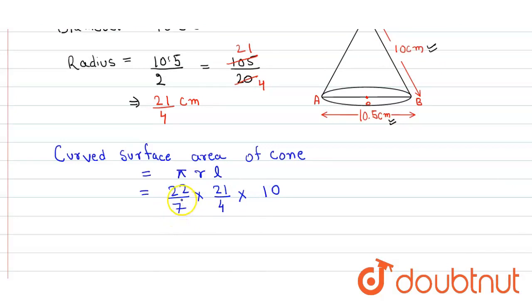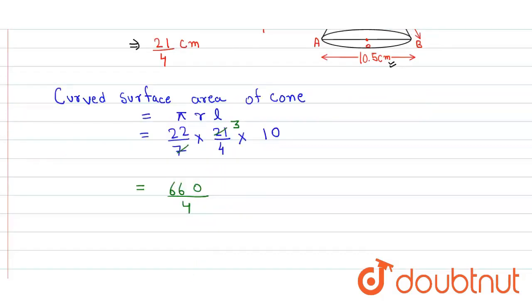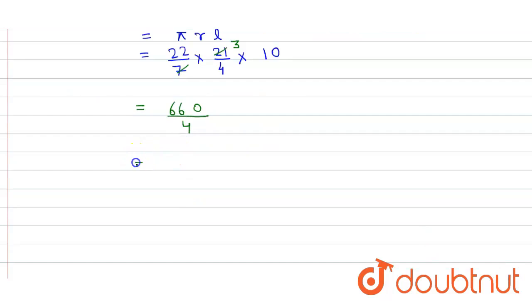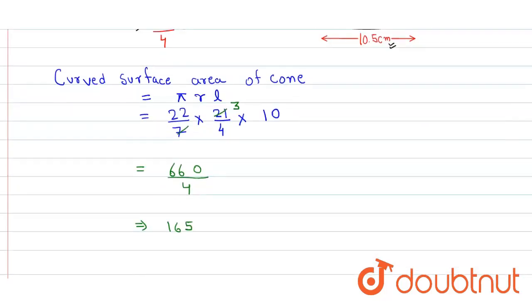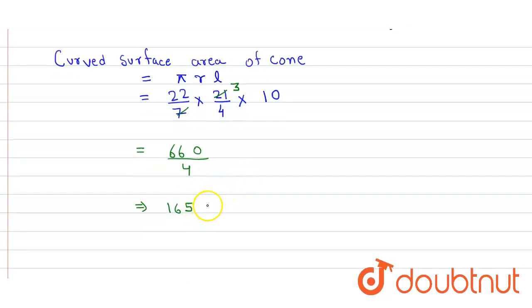Here, 7 will cancel and we get 3. We get 660 divided by 4. When we solve it further, we get 165, and the unit is centimeter square. That's our answer.